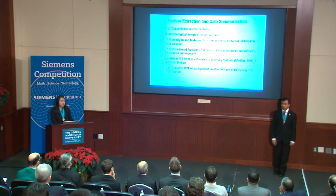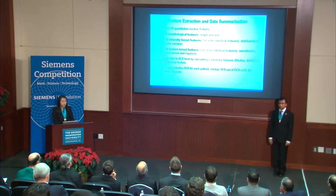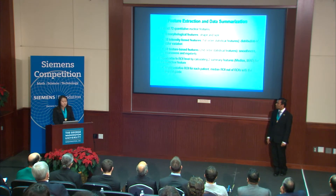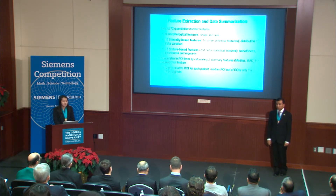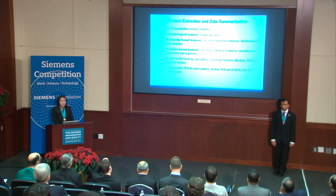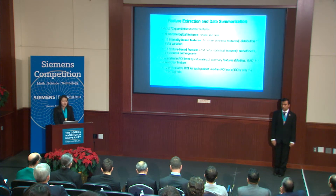From each segmented nucleus, we extracted 72 quantitative nuclear features describing size and shape, the distribution of color variation, and the smoothness and regularity of the nuclei. We then summarized our data to the ROI level by calculating the median and median absolute deviation for each nuclear feature, and selected one representative ROI for each patient by taking the median ROI out of all ROIs with the highest grade.